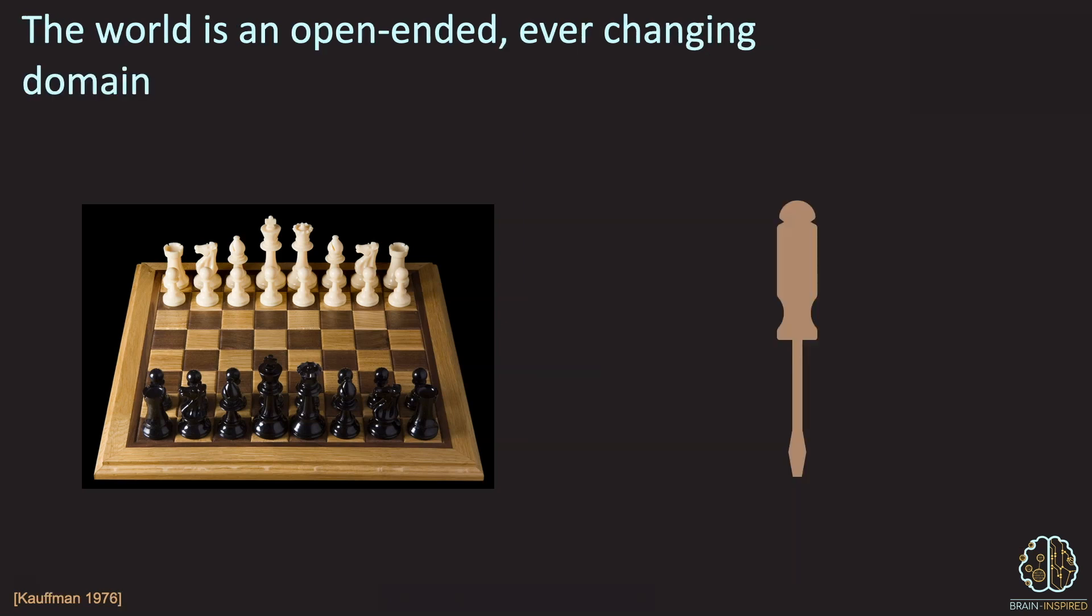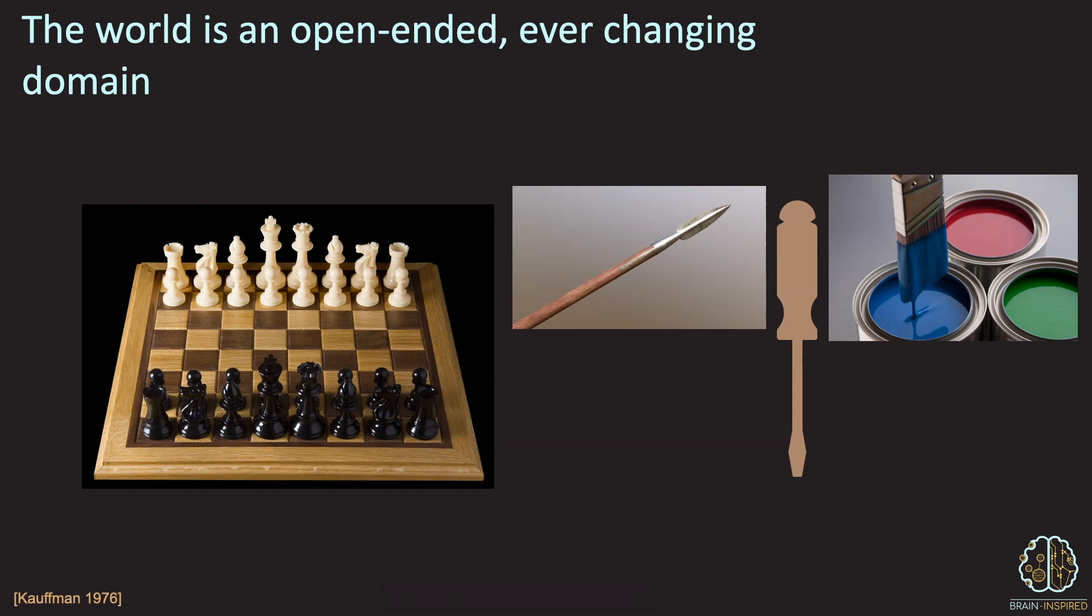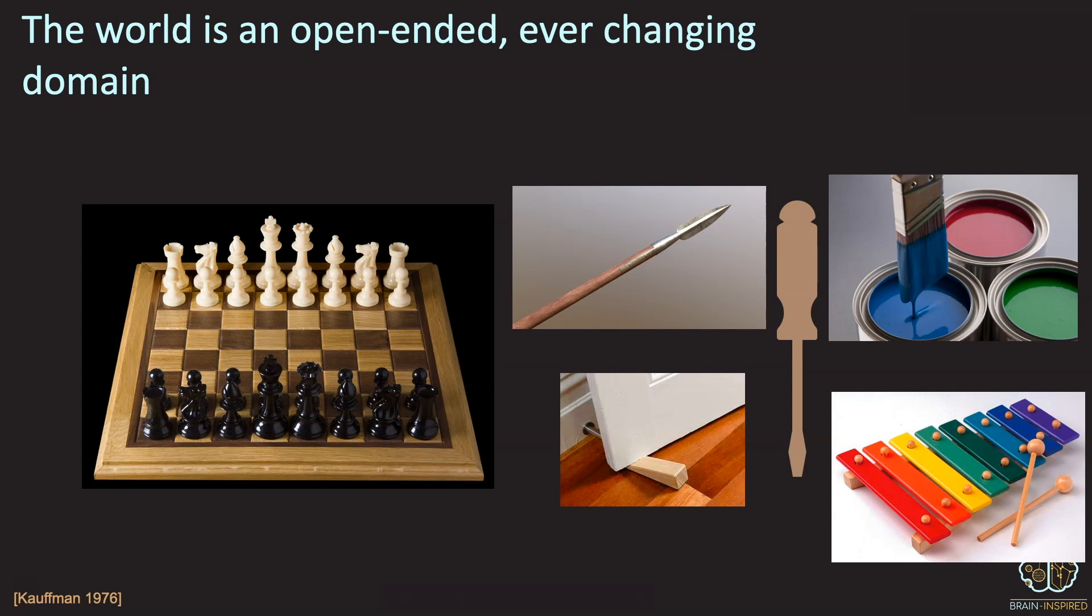Stuart Kaufman uses the example of a screwdriver. He makes the point that you fundamentally can't predict all the uses of a screwdriver. For example, you might use a screwdriver as a spear if you're hungry and near a river, or you might use it to open paint cans. You could use it as a doorstop, or even as a mallet for a xylophone. And you can imagine an infinity of possibilities of how to use a screwdriver. And of course, this brings up the human skills of creativity and insight and abductive inference, arguably none of which AI systems currently have. So how do we move AI beyond closed systems to something more like what we experience in the world, an open-ended system?